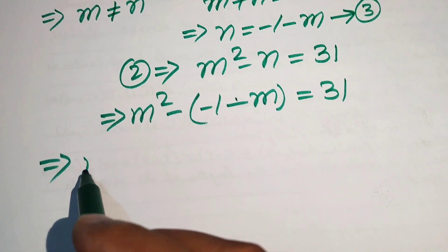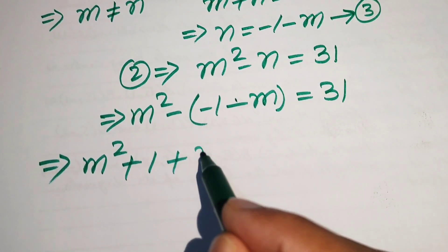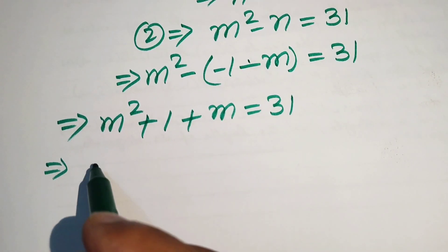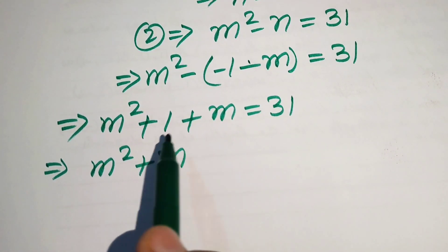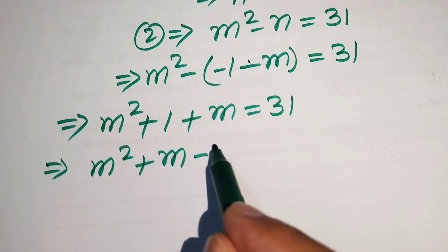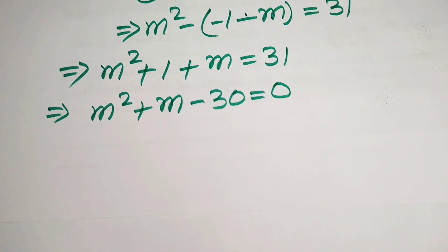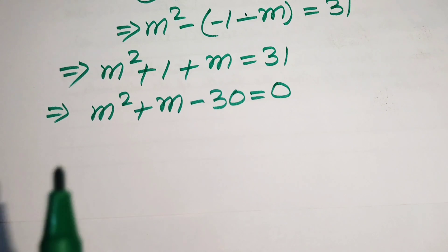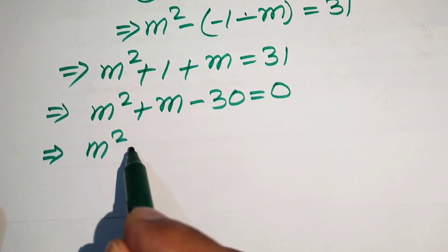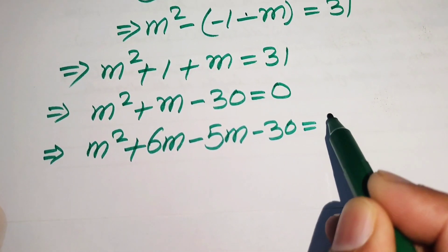Distributing the negative sign, this becomes m squared plus 1 plus m equals 31. Rearranging all terms to the left-hand side: m squared plus m plus 1 minus 31 equals zero, which simplifies to m squared plus m minus 30 equals zero.